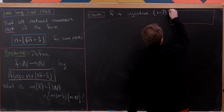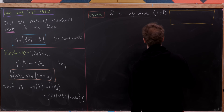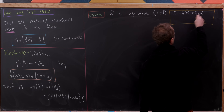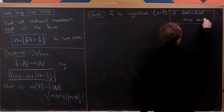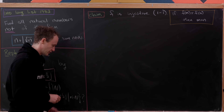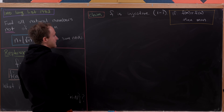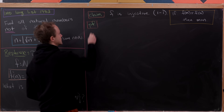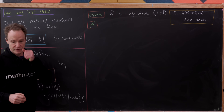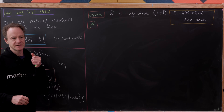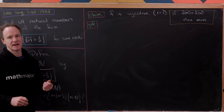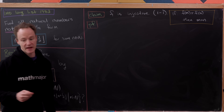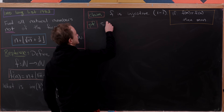Let's recall what injective means so we're all on the same page: if f(m) = f(n) then m = n. The proof of this claim is pretty quick, because what we'll really show is that f is a strictly increasing function, and if f is strictly increasing then it has to be injective. So let's show that f is increasing. Suppose m is less than n.